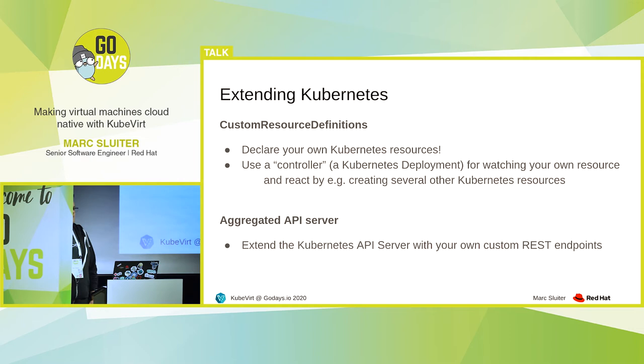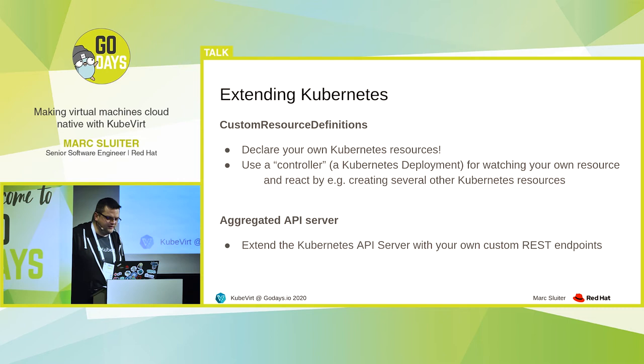The second possibility for extending Kubernetes is implementing an aggregated API server. This is more low level — it gives more flexibility but it's also a bit more complicated. With that, you can add new REST endpoints to the Kubernetes API server.